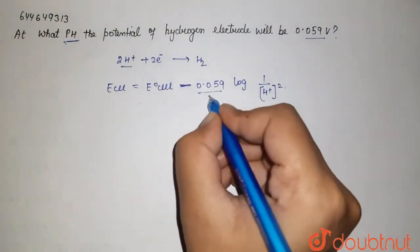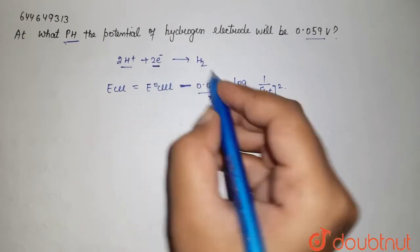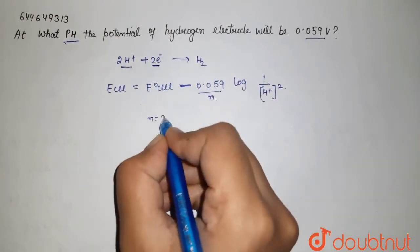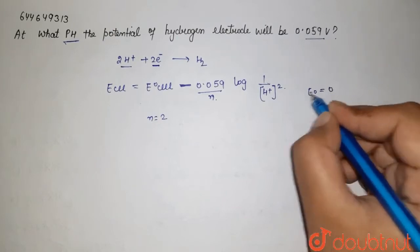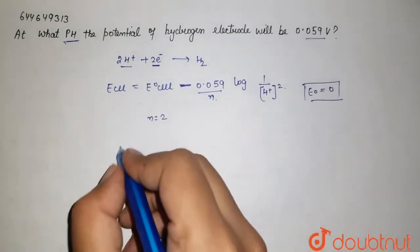Here n is the number of electrons, which is 2. E°_cell for the hydrogen electrode is 0 since it's the standard electrode. Now putting these values,